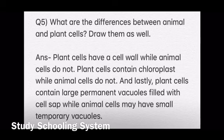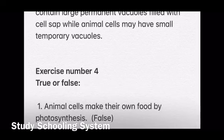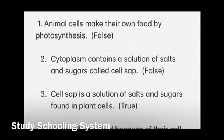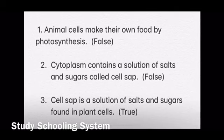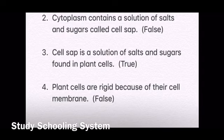Then you will write exercise number four, true or false. The first question is: animal cells make their own food by photosynthesis — this is false, because plant cells make their own food by photosynthesis because they contain chloroplast, which contains chlorophyll. The second question is: cytoplasm contains a solution of salt and sugars called cell sap — that's false, because cytoplasm is a jelly-like substance. The third question is: cell sap is a solution of salt and sugars found in plant cells — which is true. The last question is: plant cells are rigid because of their cell membrane — which is false, because plant cells contain a cell wall made up of cellulose, which makes plant cells rigid.